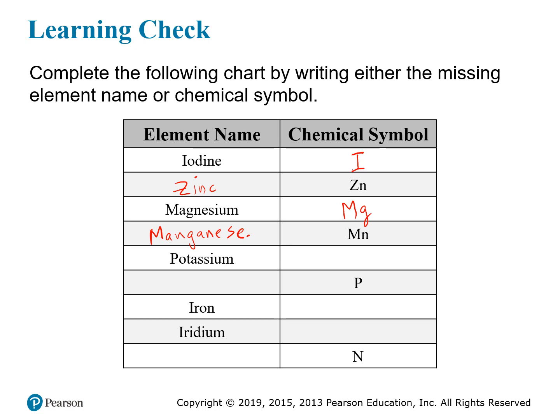Potassium is one of those where the symbol doesn't come from the name potassium — it comes from the Latin name, and it is K. P, on the other hand, is a chemical symbol, but it's not the symbol for potassium. It's the chemical symbol for phosphorus.